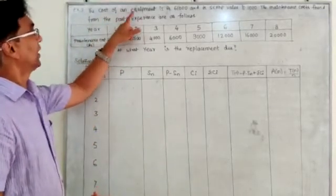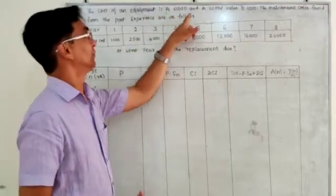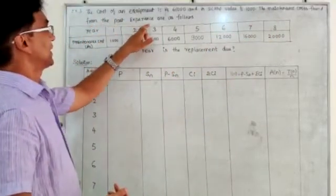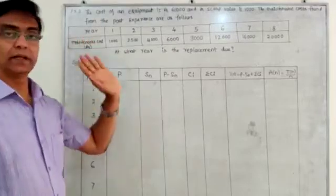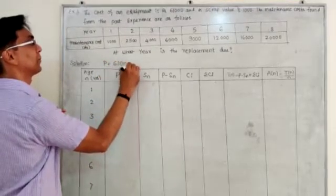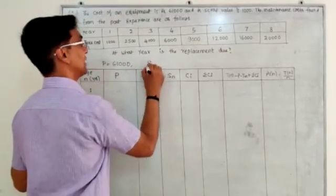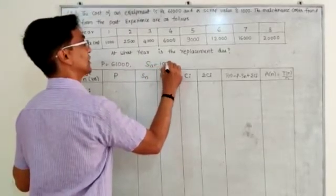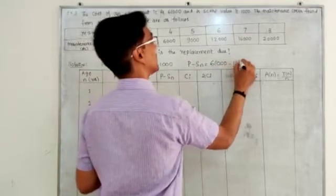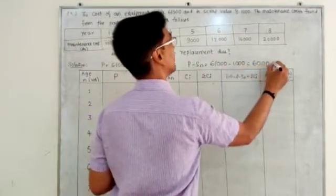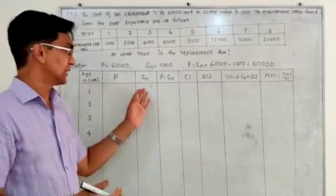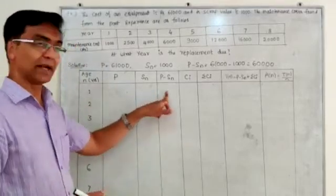See the problem: the cost of an equipment is roughly 61,000 and its scrap value is 1,000. The maintenance cost found from past experience are as follows. He has given the purchase price — P equals 61,000 — and the scrap value S_N equals 1,000 rupees. So you can directly calculate P minus S_N: 61,000 minus 1,000 is 60,000. Throughout the problem you need not write the S_N column separately, but I want to show it, so you can write S_N or without S_N directly write this column also.